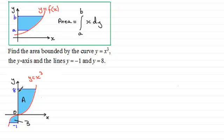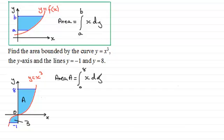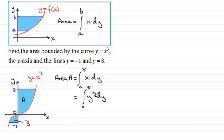For area A, going between y equals 0 and y equals 8, the area equals the integral from y equals 0 to y equals 8 of x with respect to y. Since we're integrating with respect to y, we need to make x the subject. From y equals x cubed, taking the cube root of both sides gives x equals the cube root of y, which written as an index is y to the power one third. So we integrate y to the power one third from y equals 0 to y equals 8 with respect to y.